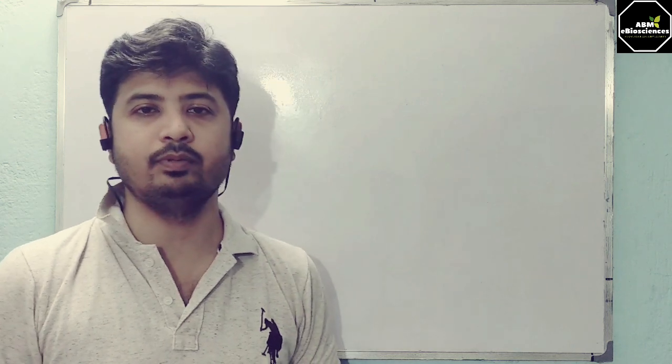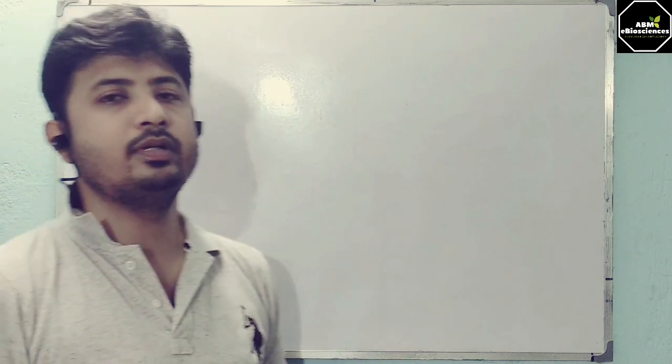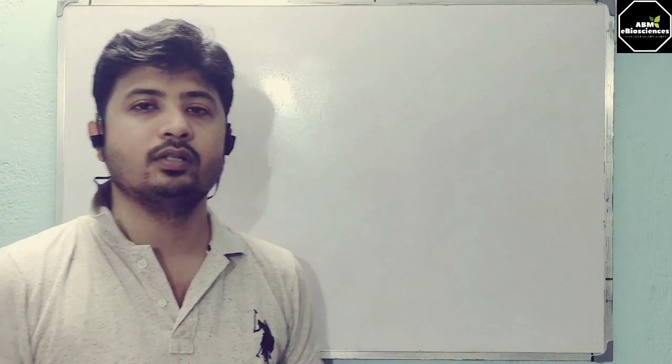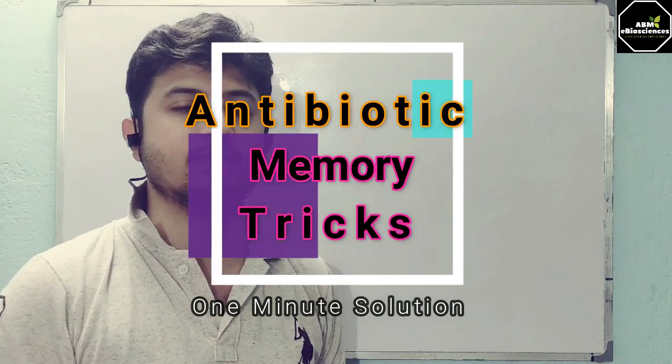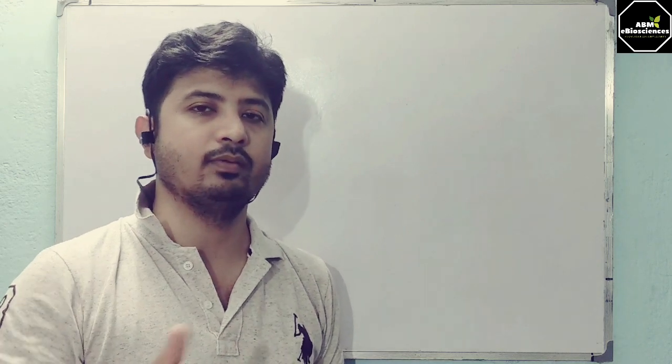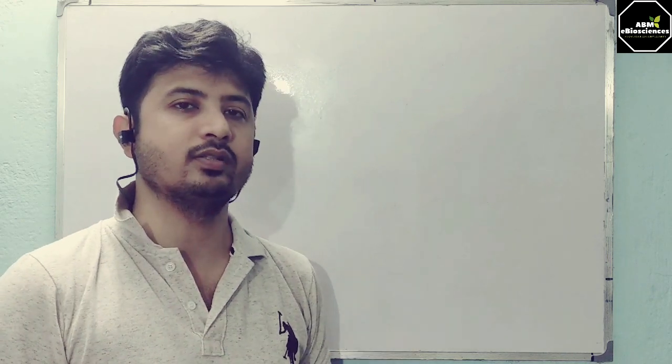Hello and welcome to another class of ABB Paper Sciences. This is Abhishek with you. Today I'll be giving you some memory tricks for antibiotics. The list of antibiotics is long, covering cell wall synthesis inhibitors, protein synthesis inhibitors, metabolic analogs, and cell membrane inhibitors. Today I'll take the longest lists — cell wall synthesis inhibitors and metabolic analogs — and give you some tricks. We just need to remember one sentence and a few words.